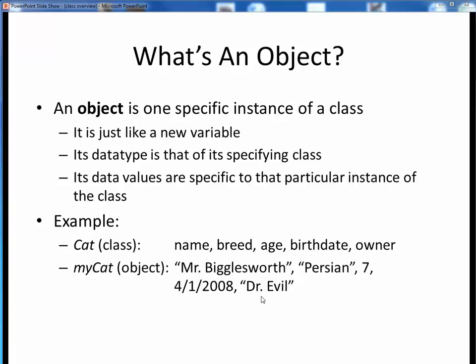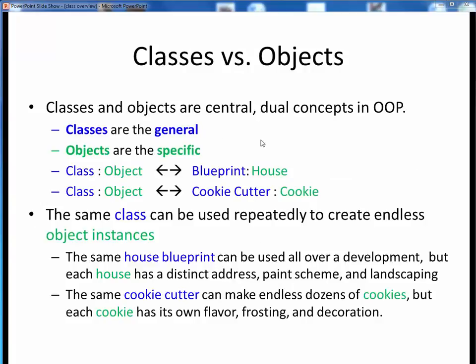Any other cat we might describe would have these same five general characteristics, but different values of them. Now that we've seen both classes and objects, what's the relationship between them? Classes and objects are the two central dual concepts in object-oriented programming. Classes are the general, and objects are the specific instances of them. A class is to an object as a blueprint is to a house, or a cookie cutter is to a cookie. We can use the same general class description to stamp out any number of specific class instances.